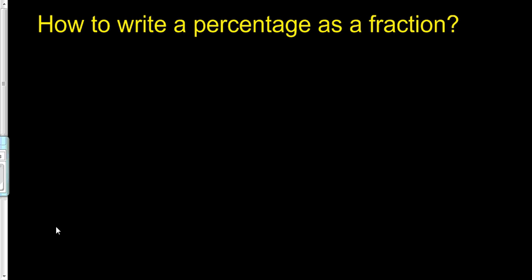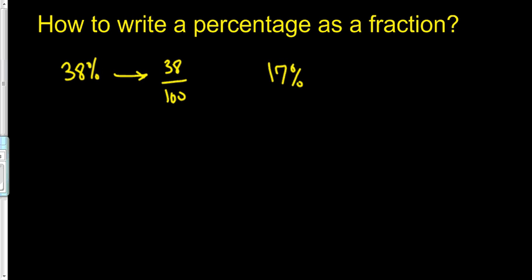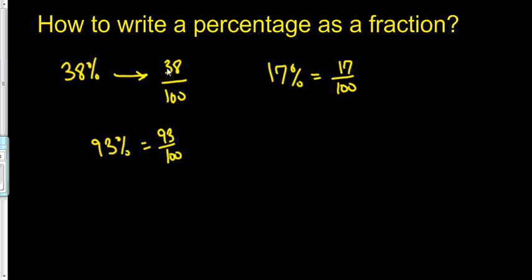How can you write a percentage as a fraction? Let's take 38% — that's 38 parts for every hundred, so we write it as 38 over 100. Similarly, 17% of a hundred pennies would be 17, so it's 17 over 100. And if it was 93%, it would be 93 over 100. So we read these as 38 hundredths, 93 hundredths, and 17 hundredths.